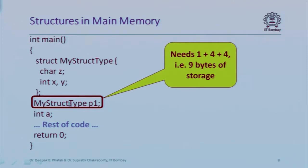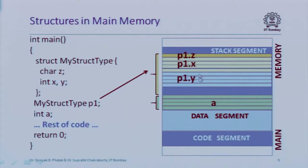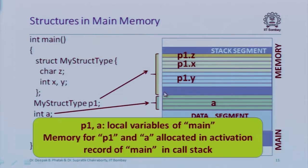For variable a, we allocate four bytes because an integer requires 32 bits. For p1, which is an object of my_struct type, it needs two integers and a character — that's eight bytes plus one byte, so nine bytes. In memory, there would be one byte for member Z, four bytes for member X, and four bytes for member Y. You'll notice I've left a gap in the brace, and we'll see why in a moment.